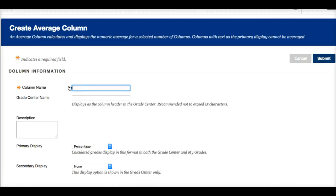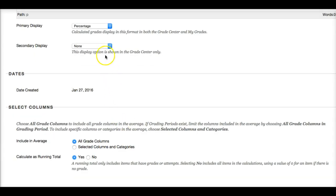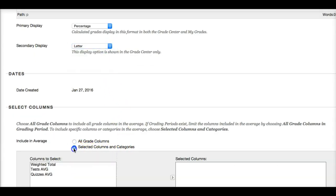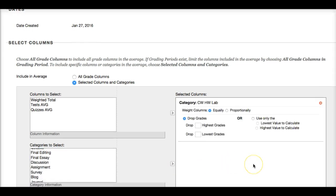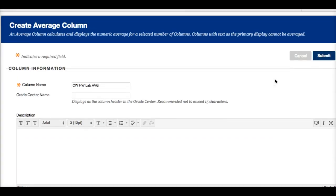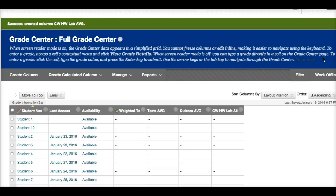And we've got homework average. Percentage. Letter. Selected columns. So everything with this particular category will be averaged in this column. So here are our average columns. Test average. Quiz average. Homework lab average.